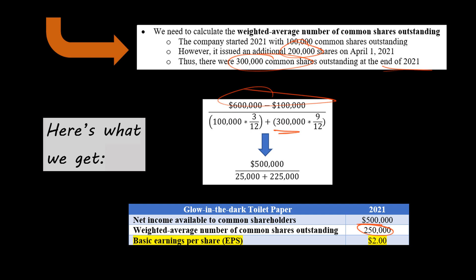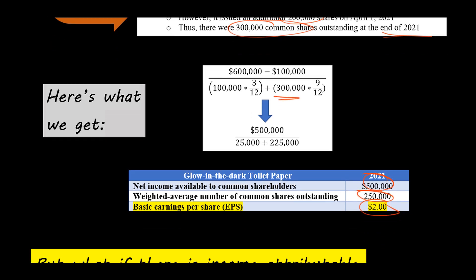Our numerator is $500,000. So $500,000 divided by 250,000 shares gives us $2.00 as the basic earnings per share for this company.